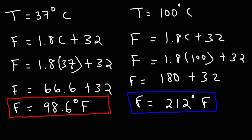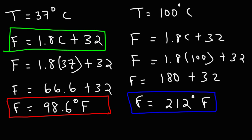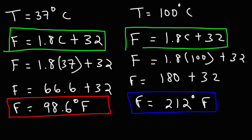So 212 degrees Fahrenheit is the temperature at which water boils at sea level. Now you know how to calculate the Fahrenheit temperature from Celsius — you just use the formula. That's how you can convert Celsius to Fahrenheit.